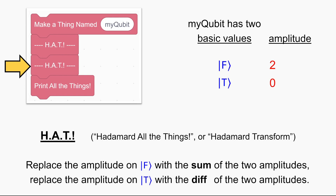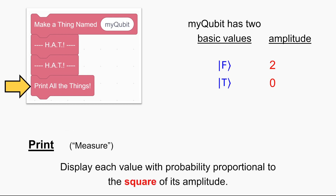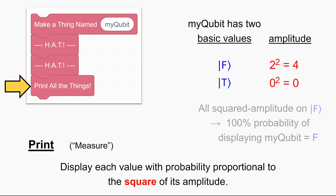This effect where two amplitudes get subtracted leaving zero is sometimes called interference. We now come to the print instruction, and once again each value is displayed with probability proportional to the square of its amplitude. 2 squared is 4 and 0 squared is 0. So all the squared amplitude is on false, which means there's a 100% probability of displaying my qubit equals false — just like we saw in the Scratch quantum computer.